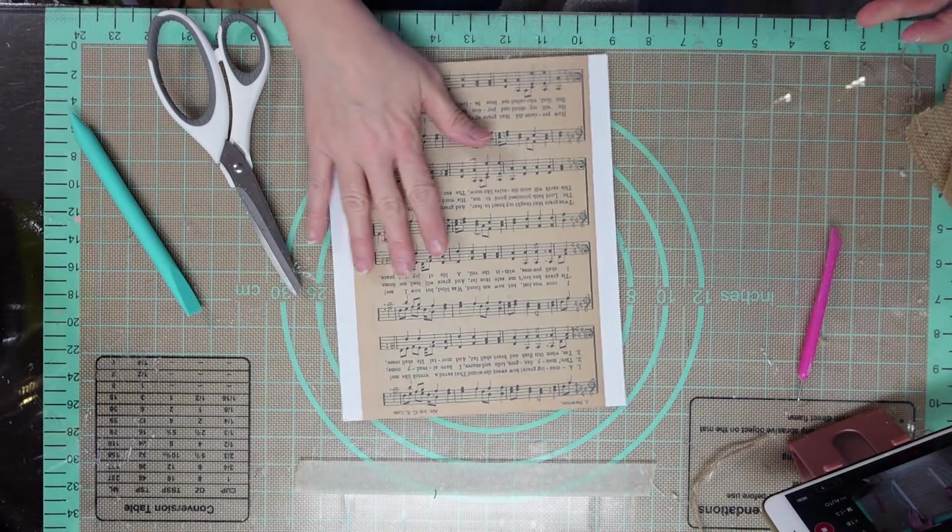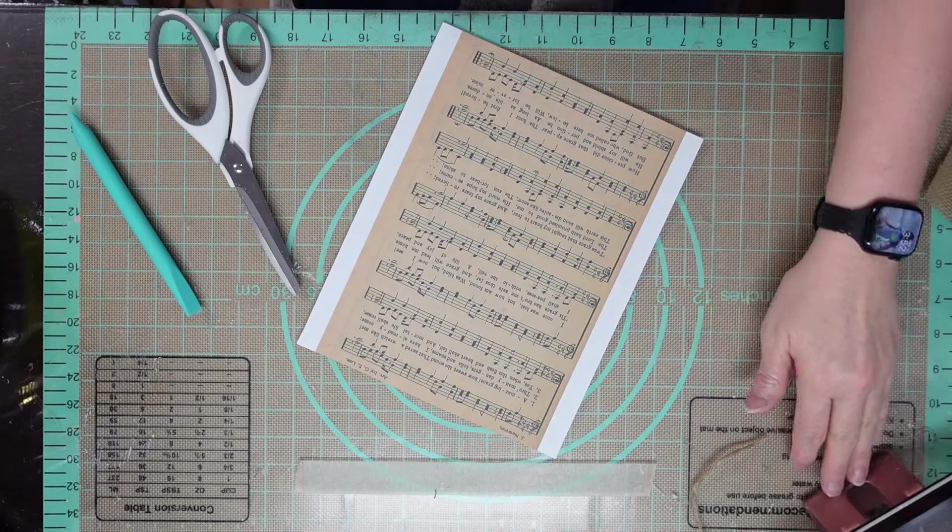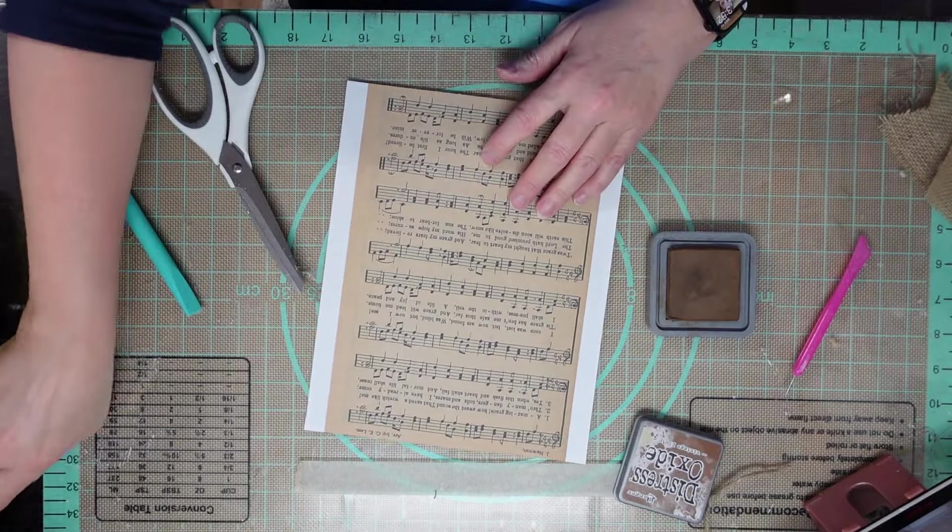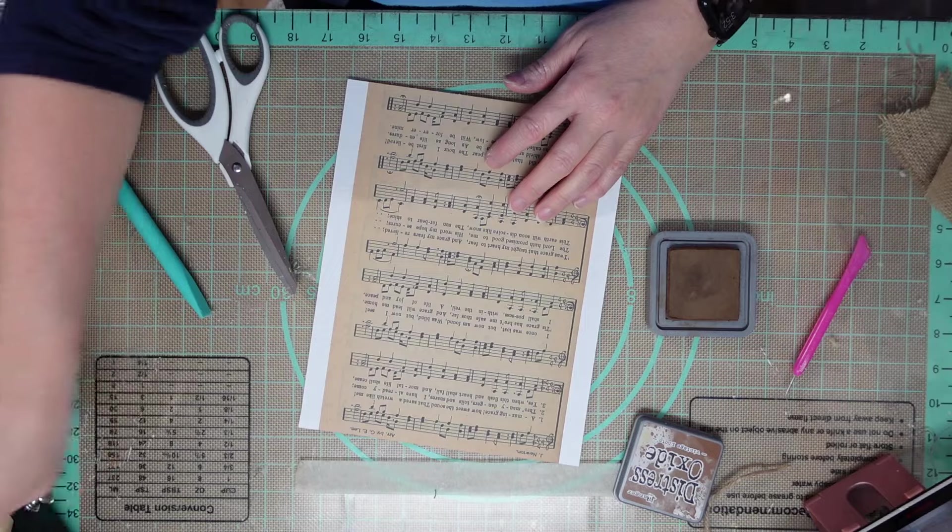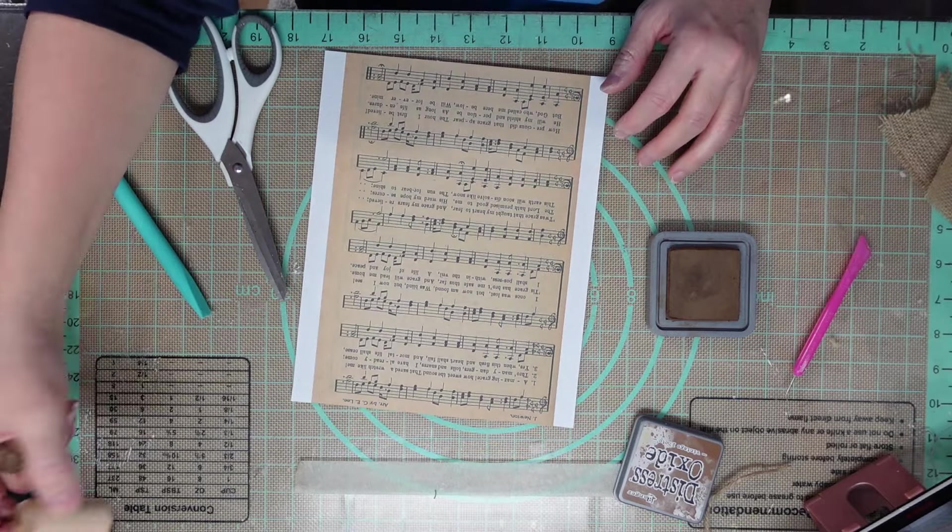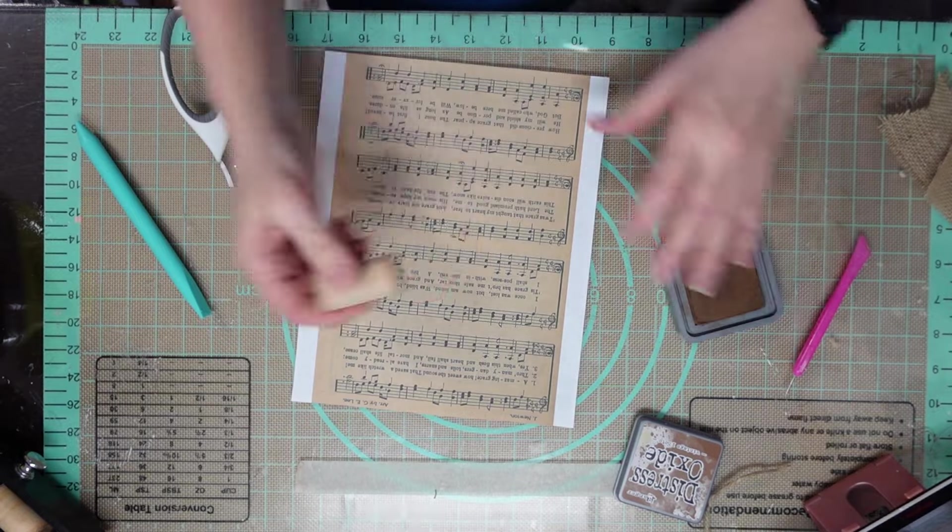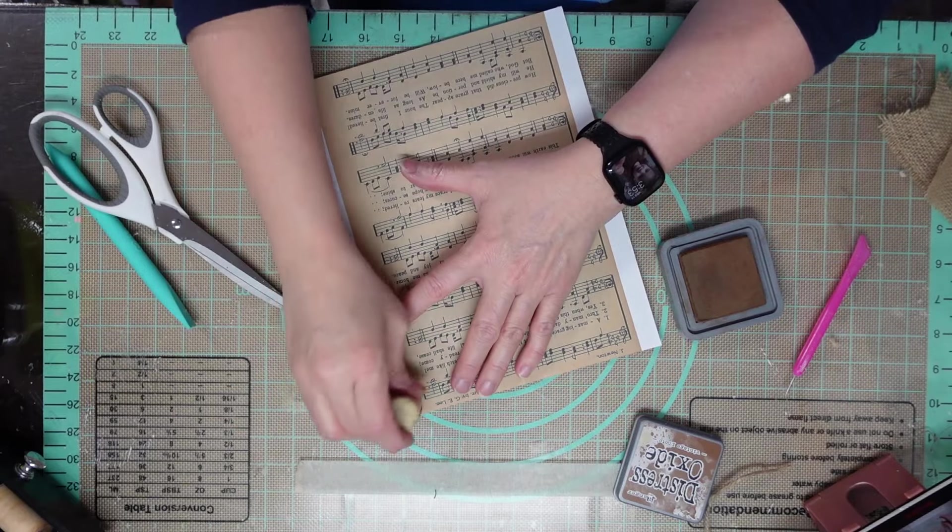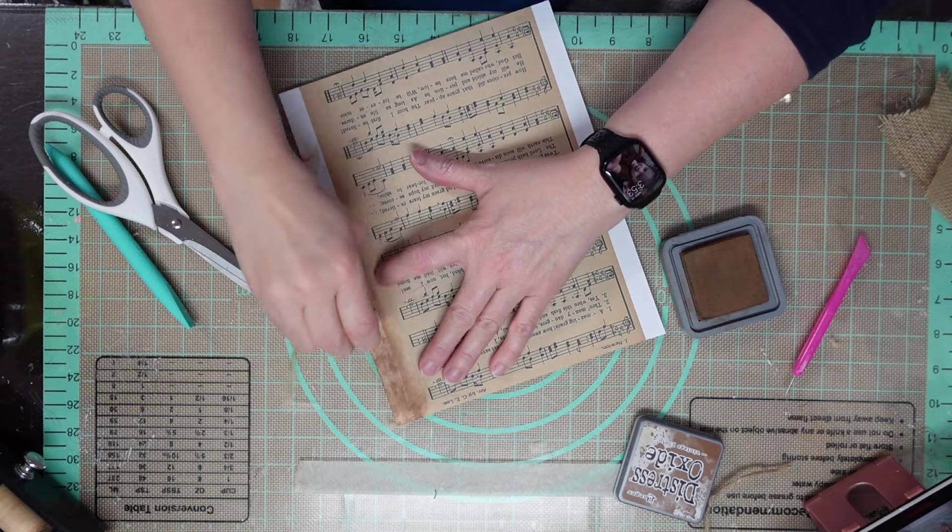Now you don't have to do this if you don't want to but I printed this. I found it online and I printed it. You can find printables, you can buy printables, whatever you want to do. And it had printed this way with white sides. I couldn't get it to do anything else. So I'm going to take my distress oxide in vintage photo and I'm going to start distressing this to blend it in. You don't have to do this if you don't want to.